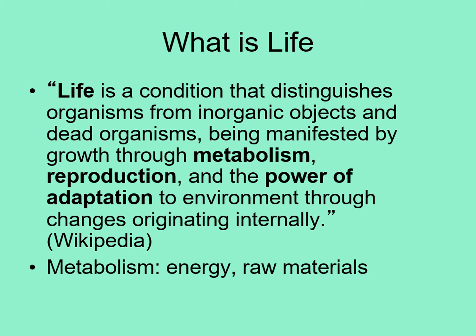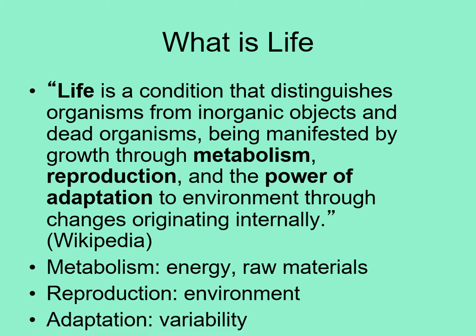For an organism to grow through metabolism, we need two things: a source of energy that allows that growth to occur, and the raw materials the organism is made of. Reproduction requires an environment that allows all of the complex chemistry required to occur — on Earth, this means liquid water. Finally, adaptation means that the organism itself must have some variability in its reproduction; otherwise, all of its descendants will simply be copies of itself and won't have any chance to adapt.